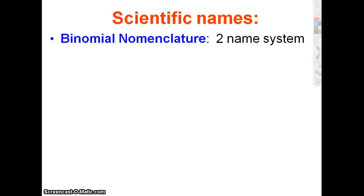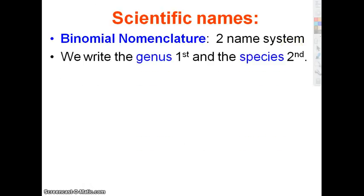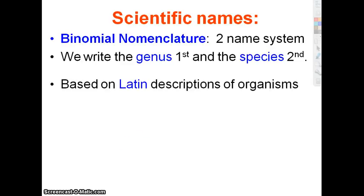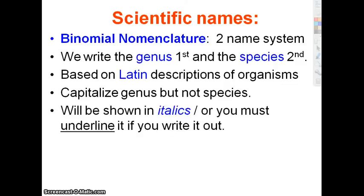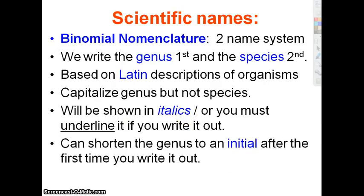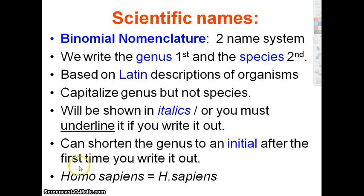Scientific names use binomial nomenclature. Nomenclature means a naming system; binomial means two. So binomial nomenclature means we have a two-name system. The genus is first, species is second. Typically they're based on Latin. We capitalize the genus, and either it's in italics in a book, or you underline it if you write it out. Sometimes we see the genus shortened — so if a book mentions Homo sapiens multiple times, after the first use it may just say H. sapiens.